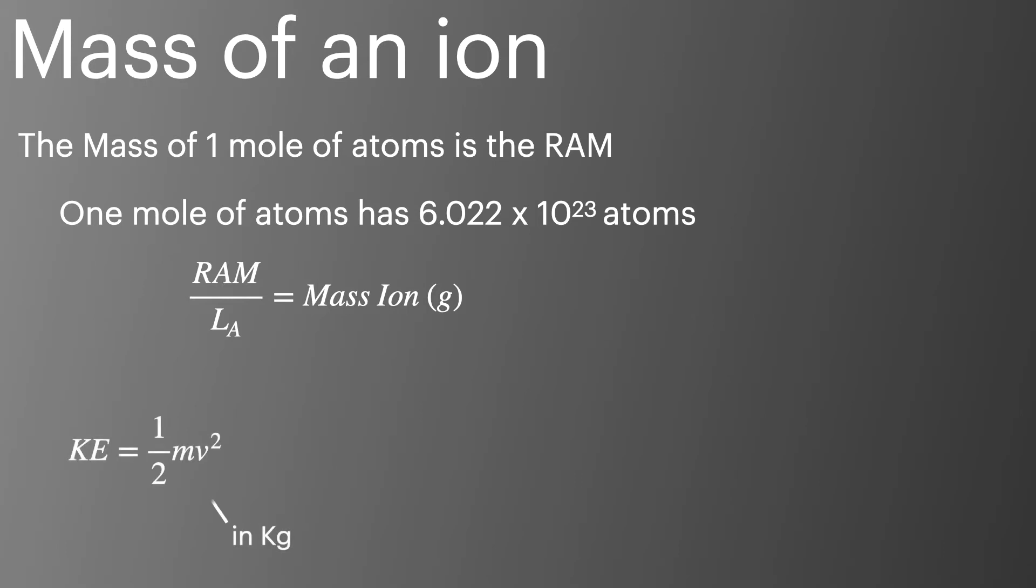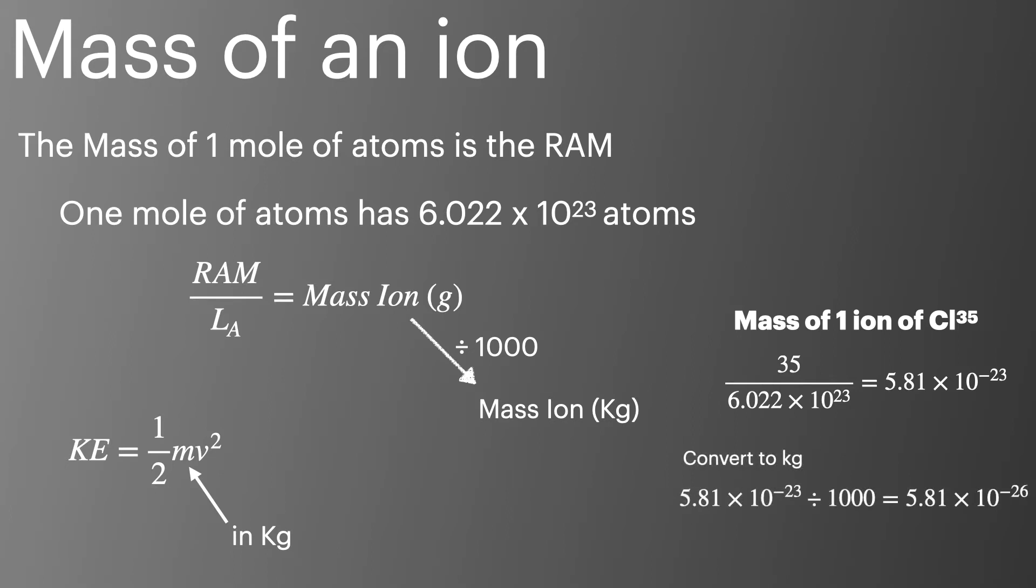But we're going to be using that mass in the kinetic energy equation, which needs the mass to be in kilograms, so we divide our mass by a thousand to convert it. If you want to work out the mass of an ion of chlorine 35, you must first divide the relative atomic mass of 35 by Avogadro's constant, and then divide it by a thousand to convert it to kilograms.